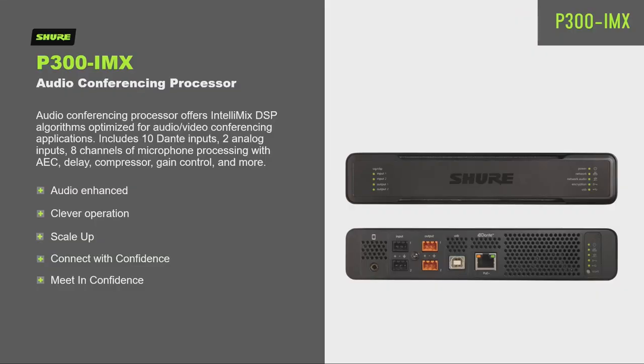With the MXA series of microarrays, you can pair up to five microarrays with one camera, allowing you to scale up to town hall and auditorium environments. The P300 conferencing processor allows you to take the auto-mixed output from each array and bring those together — centralized processing for scaling up the audio to a larger system when you need more than one array to fit the audience size.